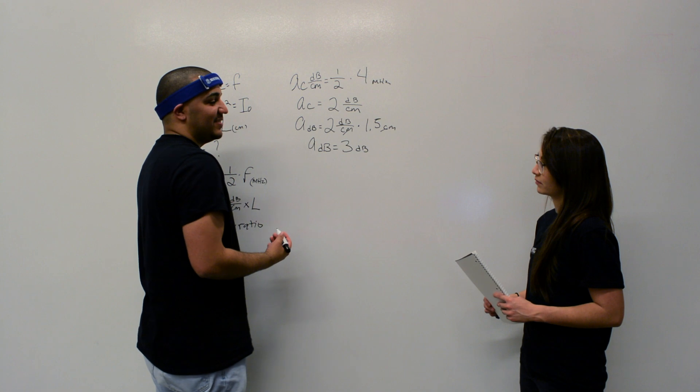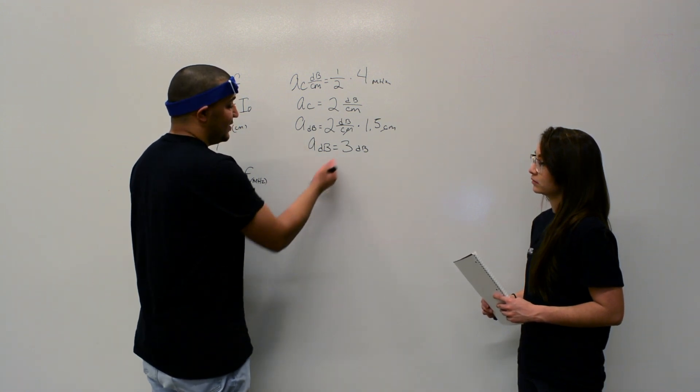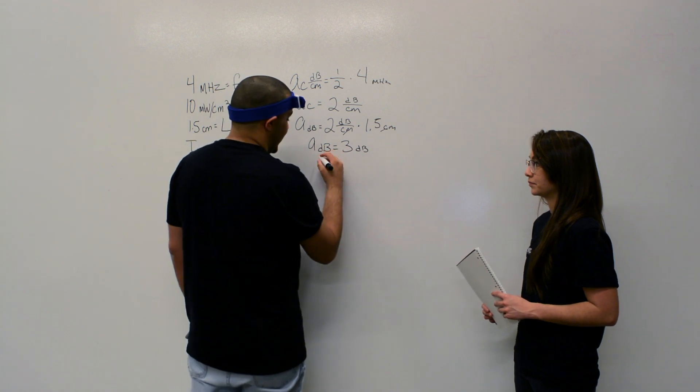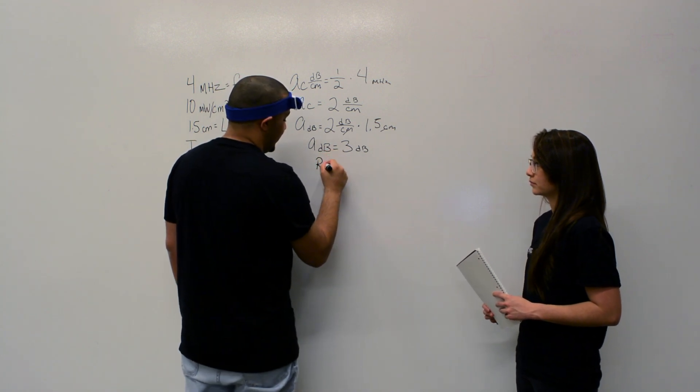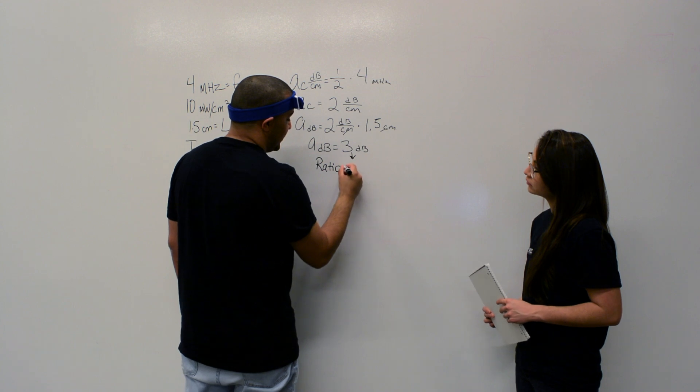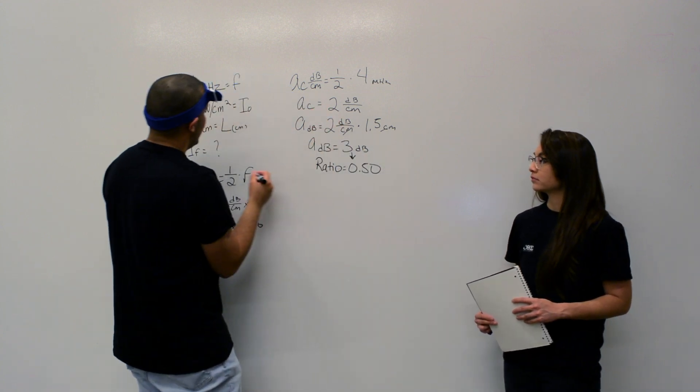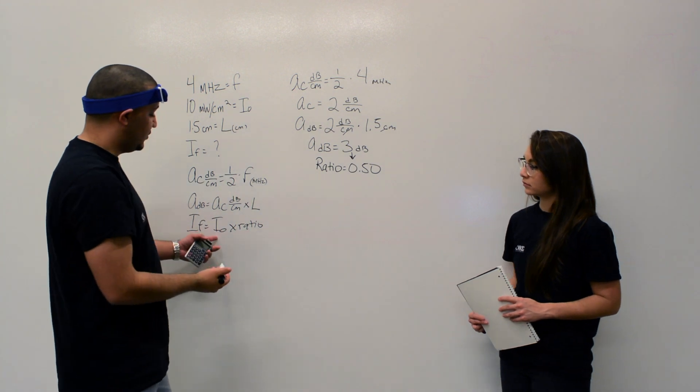So three dB's, or three decibels, is equal to how much of a ratio? A half. A half. So that is the ratio of three decibels equals 0.50. And now we're plugging this in to our initial intensity.